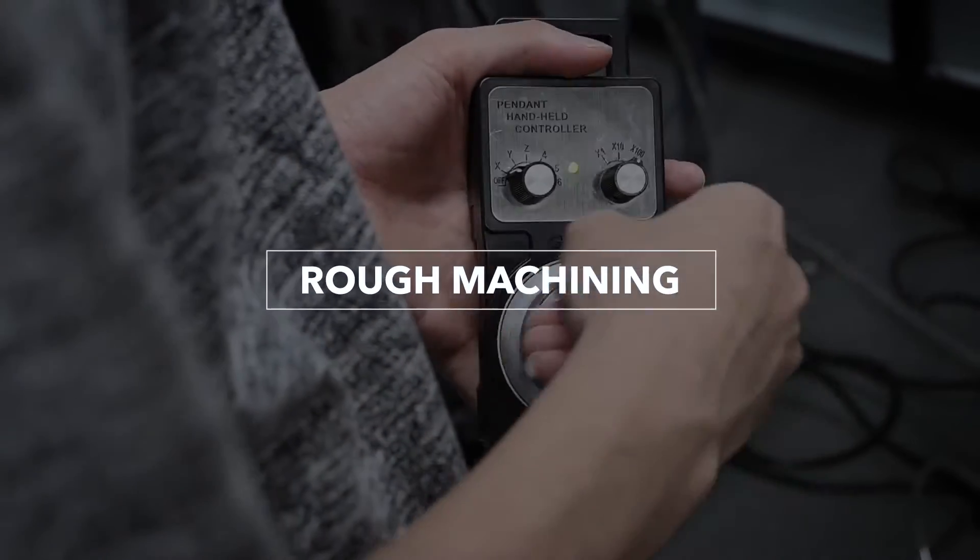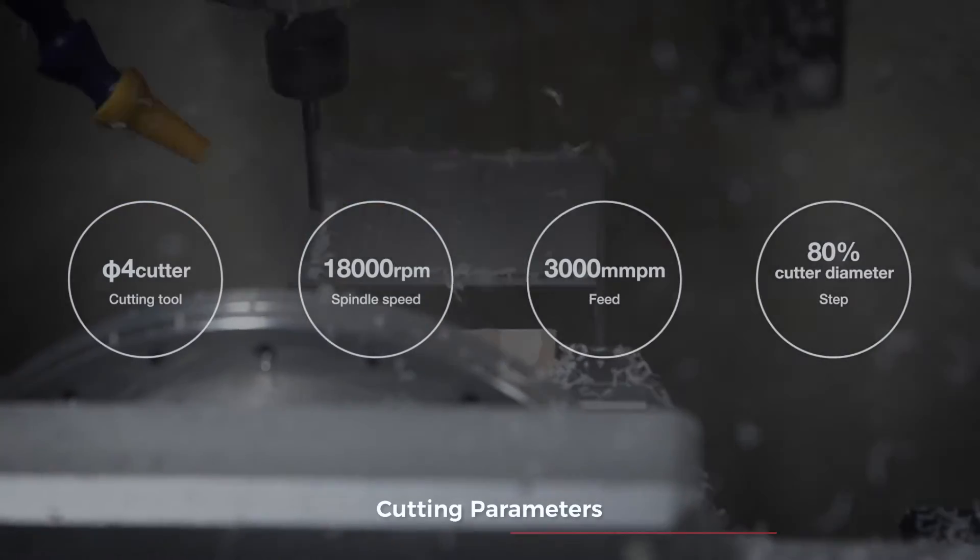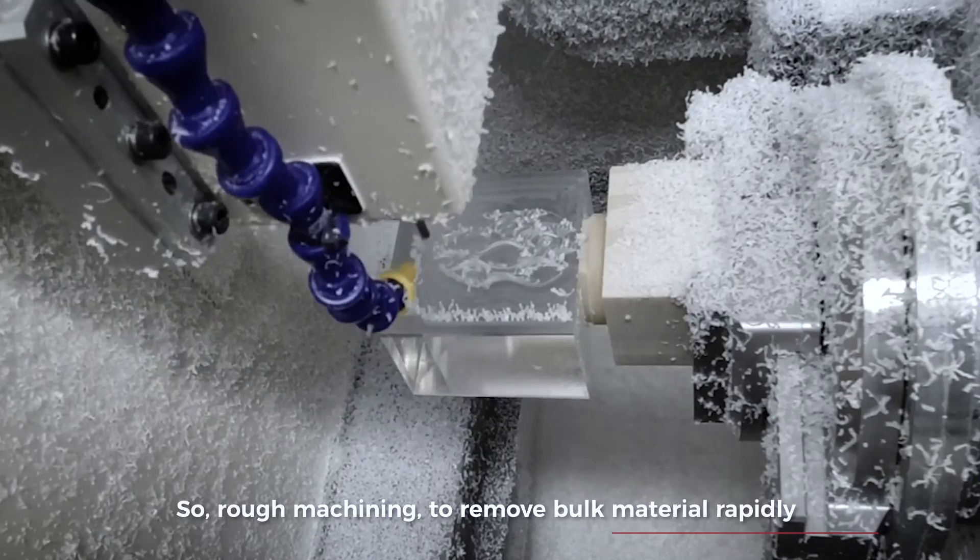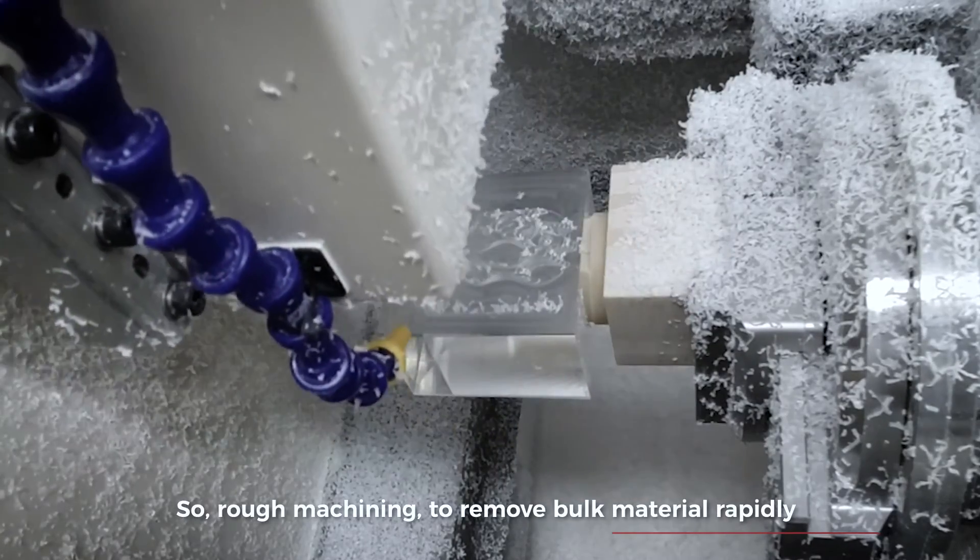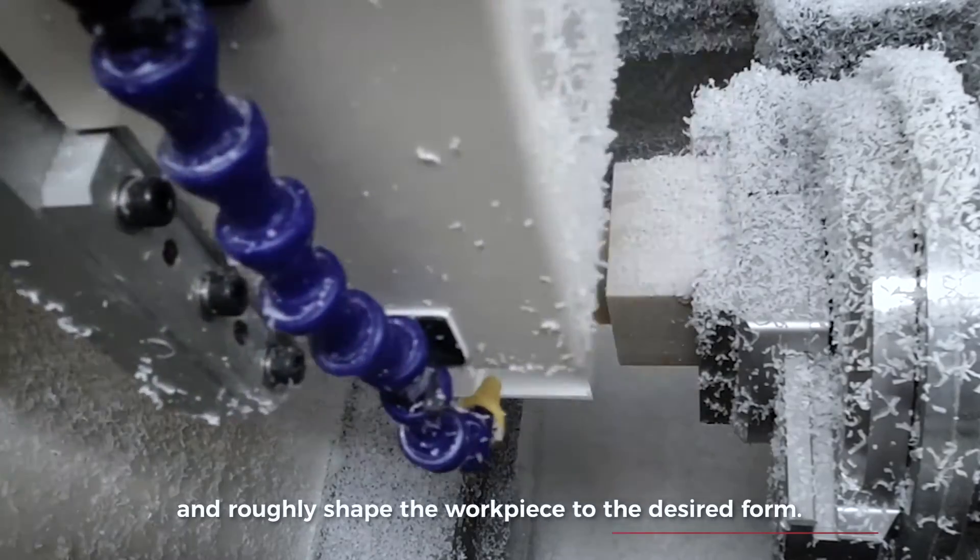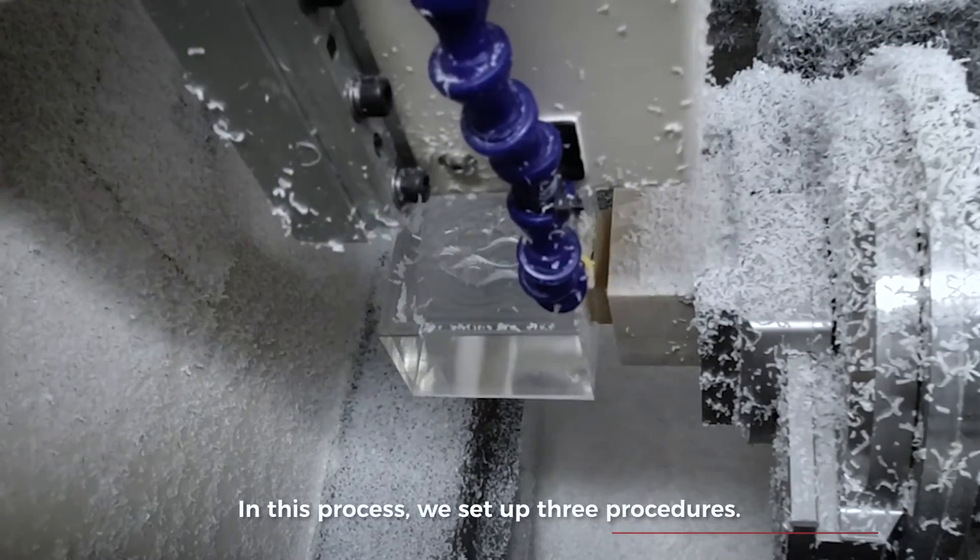Rough machining. Rough machining removes bulk material rapidly and roughly shapes the workpiece to the desired form. In this process, we set up three procedures.